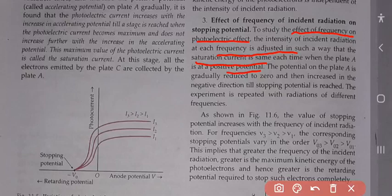To study the effect of frequency on photoelectric effect, the intensity of incident radiation at each frequency is adjusted so that the saturation current remains the same — जब हम plate A को positive potential apply करें। The potential on plate A is then gradually reduced to zero.